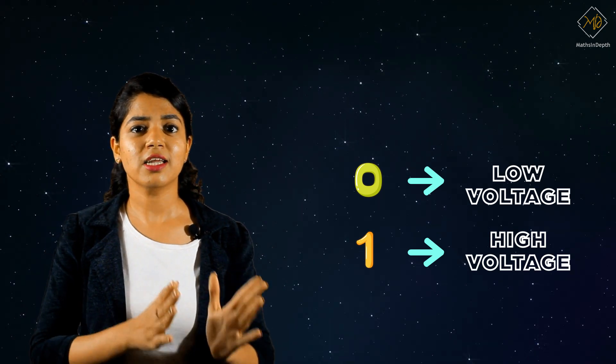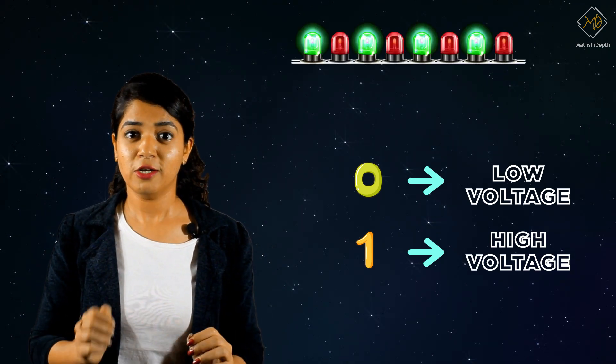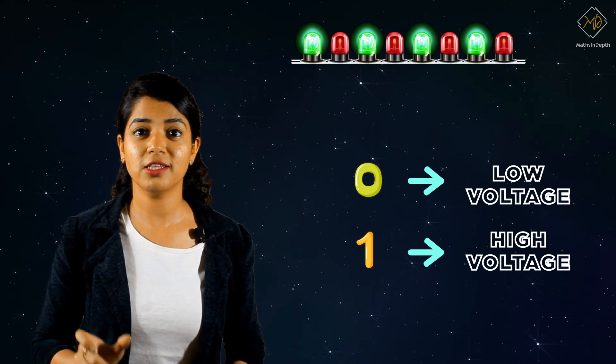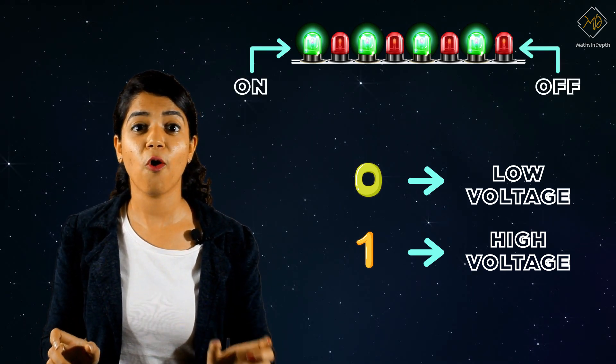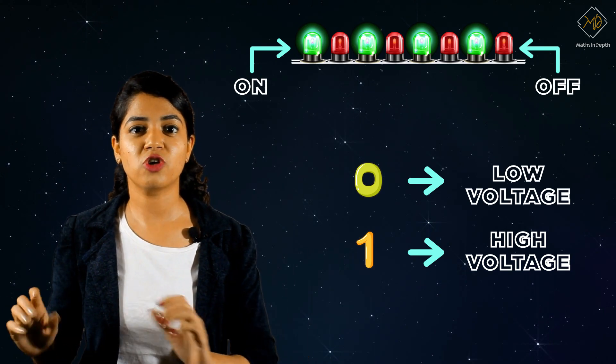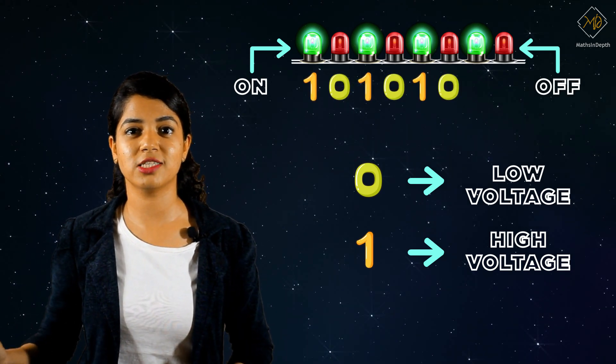Let's consider the example of an LED strip. Here, as you can see, the green part in the LED strip represents on and the red part represents off. The entire LED strip represents 10101010.